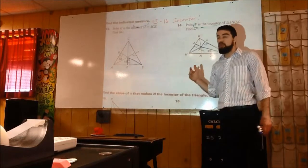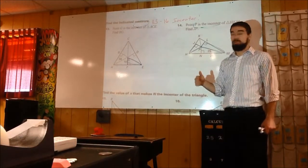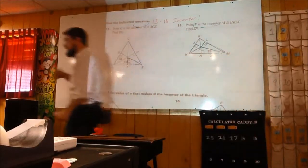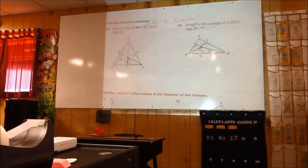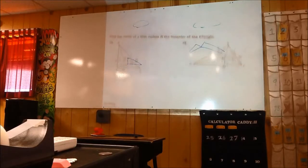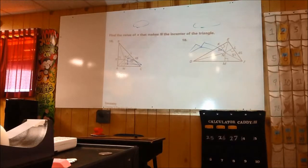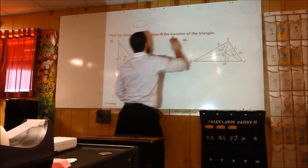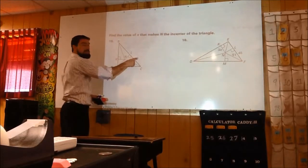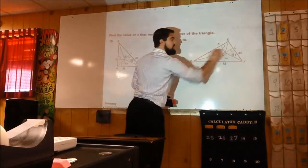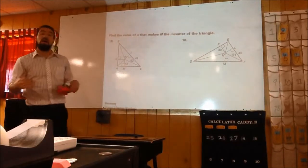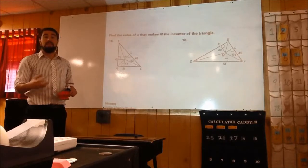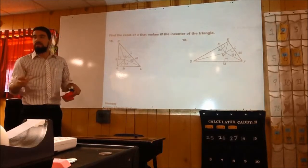They're going to give you two sides of one of these right triangles in this diagram. Those are two side lengths, and those are two side lengths. You need to solve for the third using Pythagorean's theorem, and then you can solve for the variable or whatever the question is asking for.